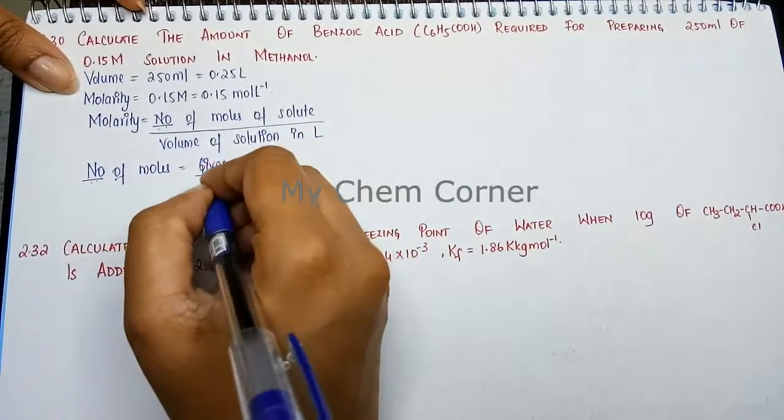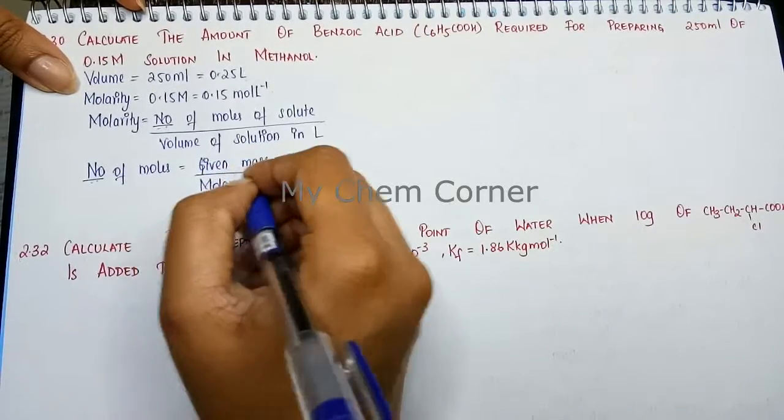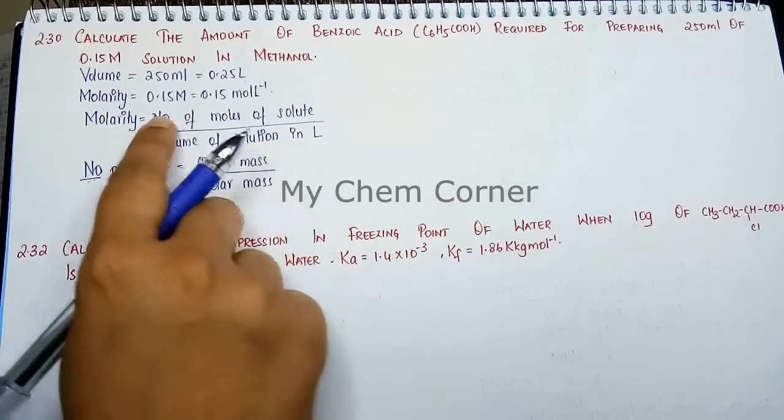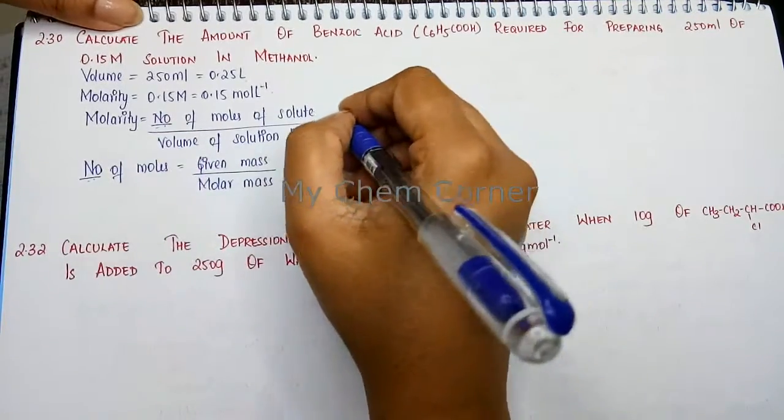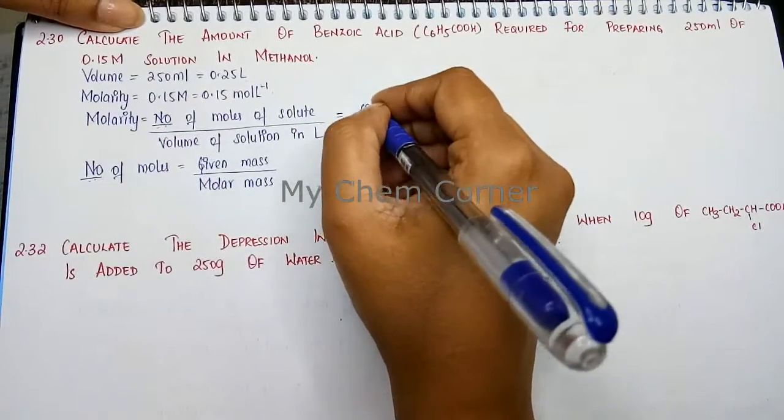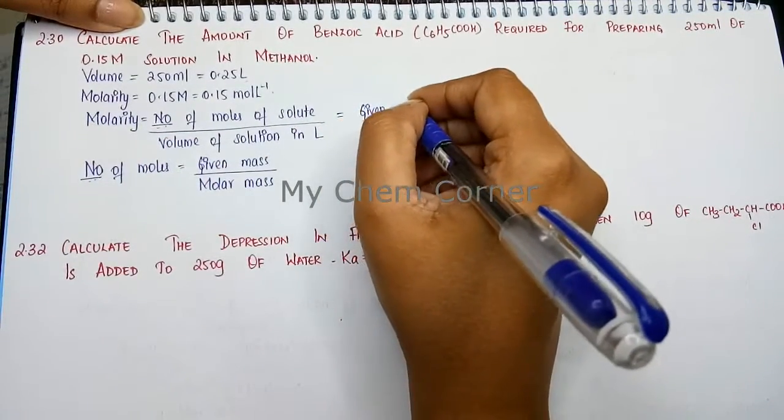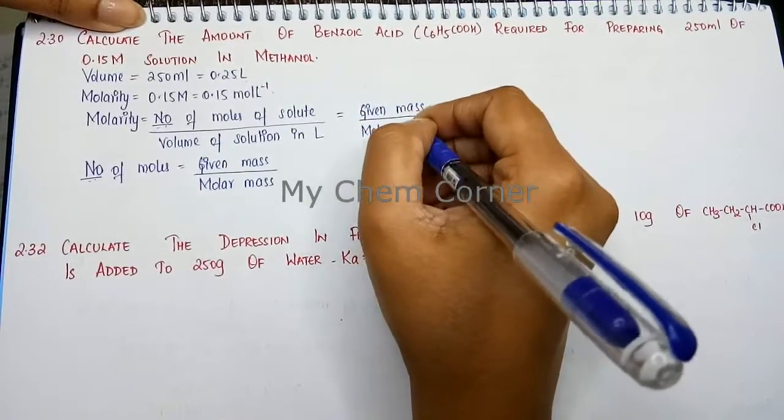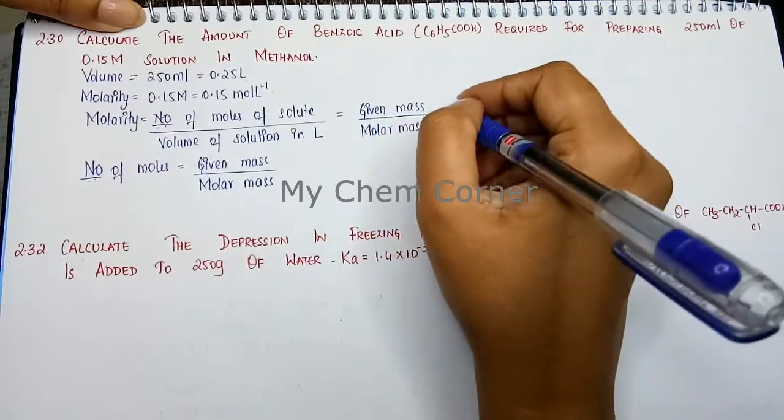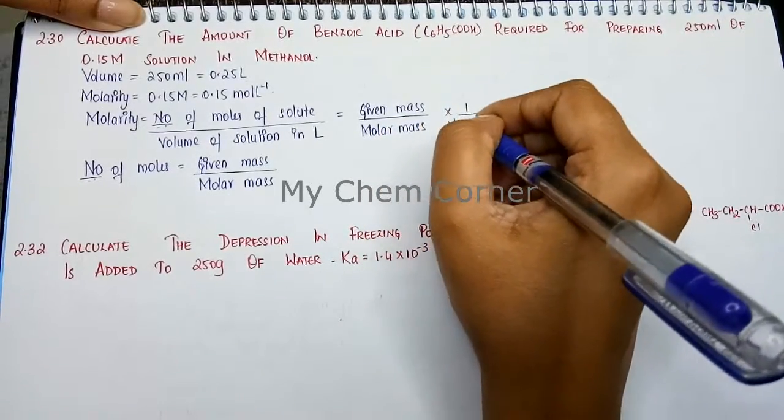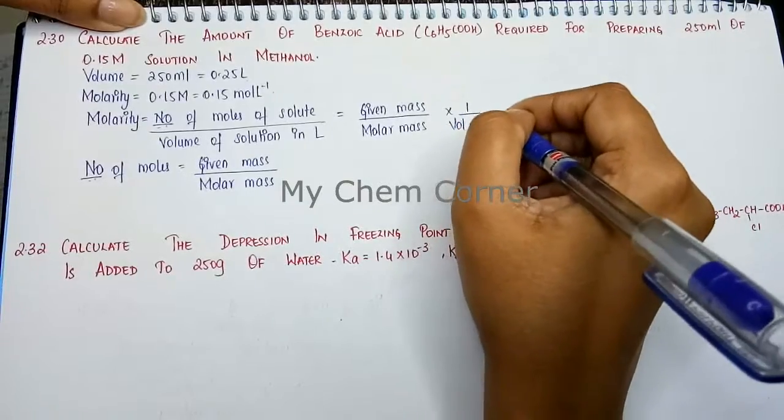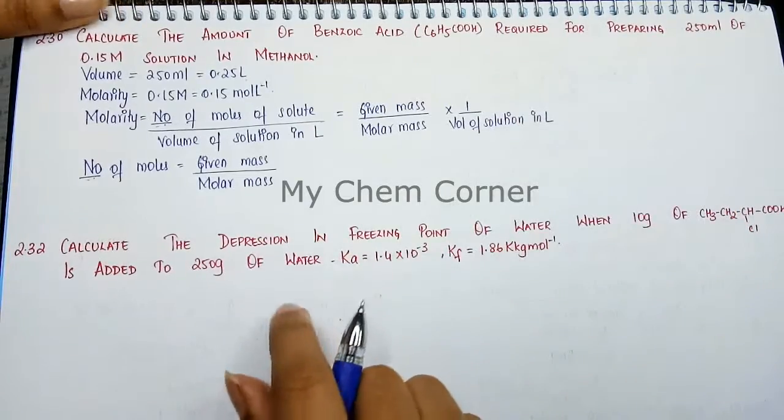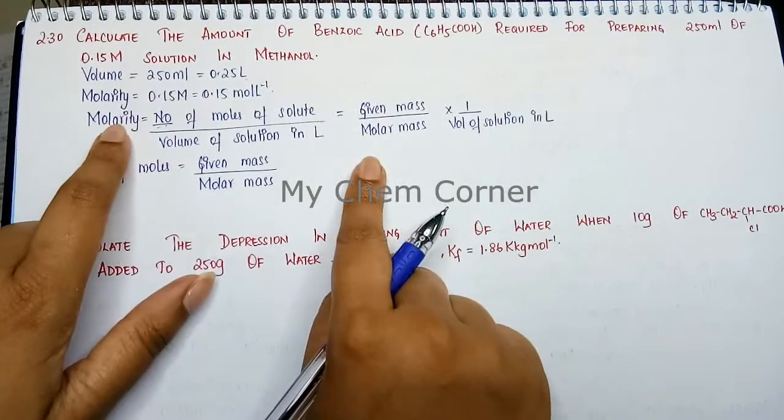To make the formula easier, we'll substitute this into the numerator. This gives us: molarity equals given mass divided by molar mass, multiplied by 1 over volume of solution in liters. This is the final formula for molarity.